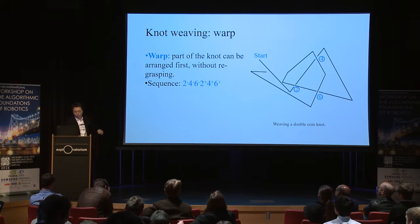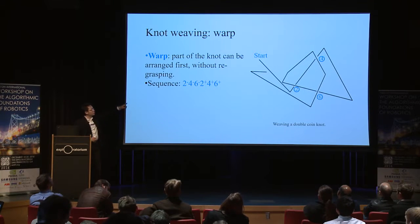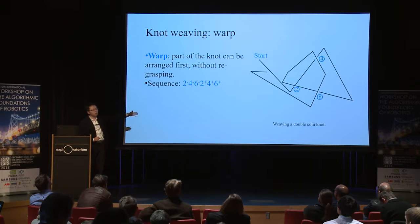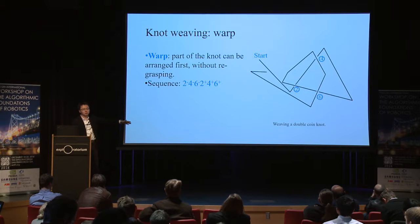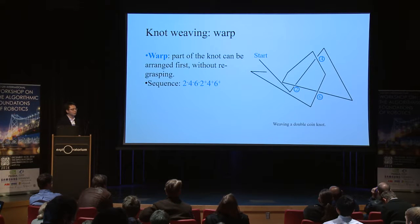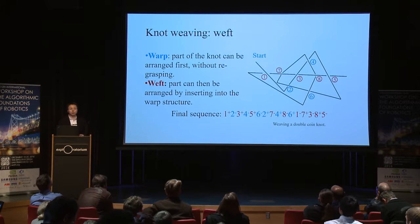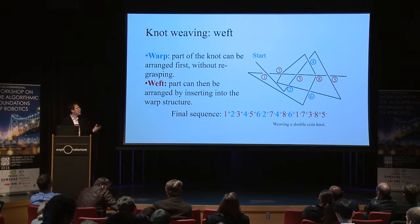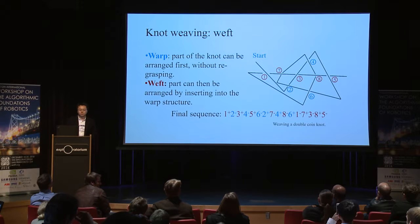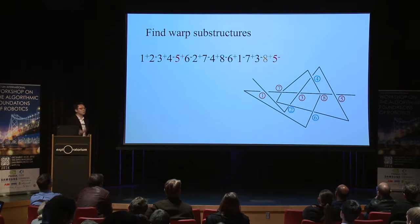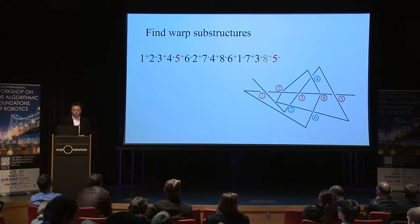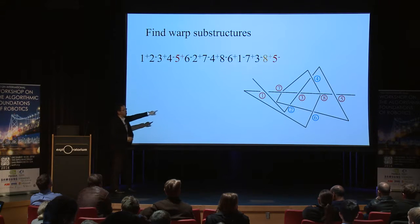Following the same knot shown earlier from the start, you can see I can just lay down all these strings in sequence without any grasping. The first three crossings — first all on the lower layer, then all on the top layer — just like an ice cream machine. Then, after we have this basic structure, we can insert the rest of the crossings like a weft, just like using the shuttle. So how do we find those warps and wefts on a given knot? We start with the text-based description of the knot, what we call Gauss code.